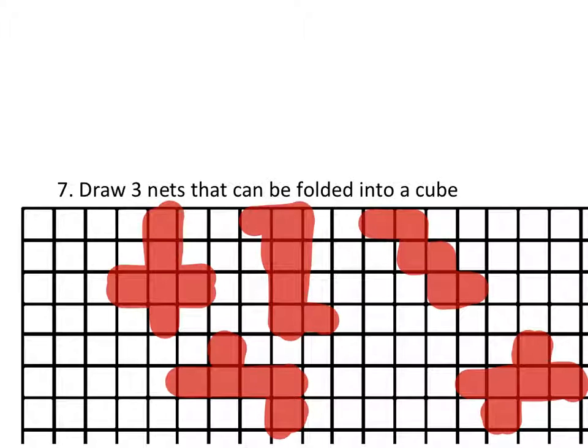You can label them if it really helps you out. So you could say that this is the base, and if that was the base of the cube, this would be the left side, the right side, the front, the back, and then the top. That just may help you to see which face is which.